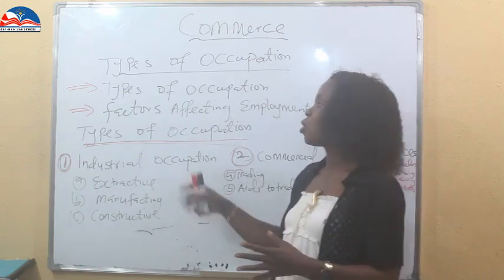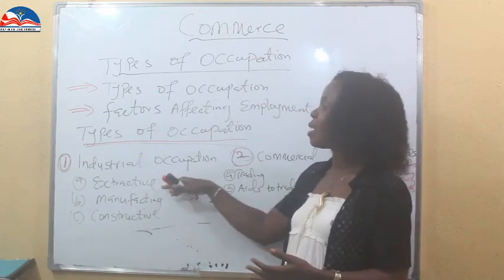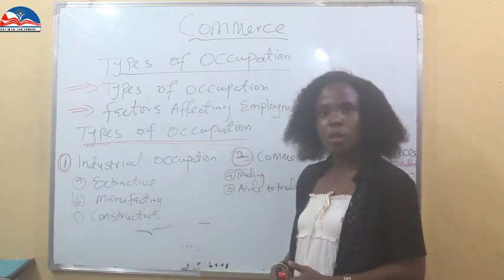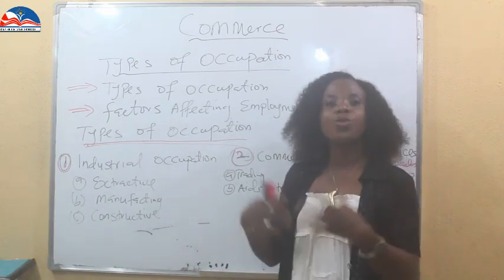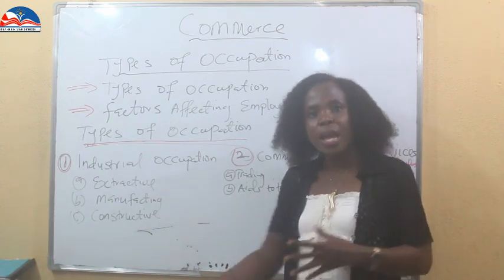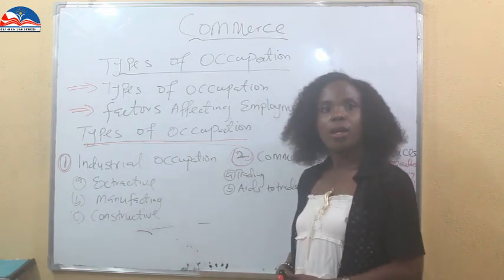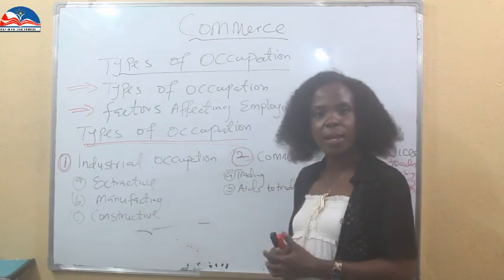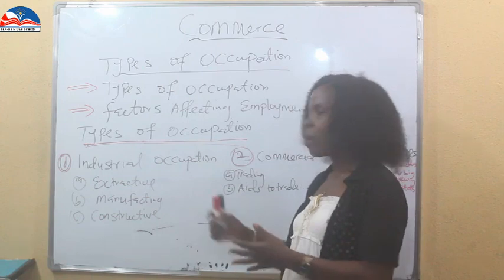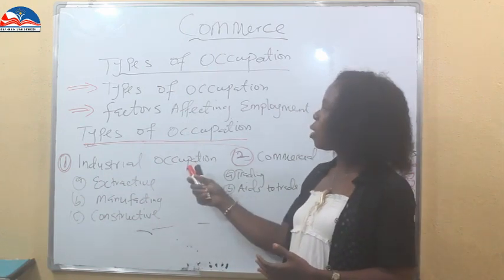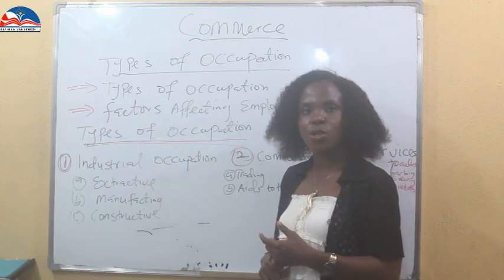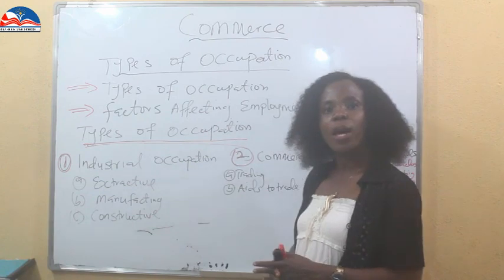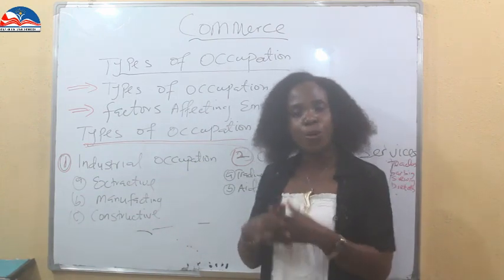For those in the industrial occupation, we have those who are in the extractive industries — those who work in the oil industry, who are into crude oil and petroleum products. They extract it in its natural state and refine it. Those who are in the mining industry are also in this area. So under extractive industry, we have those working in oil firms and those in the mining industry, like the gold sector.